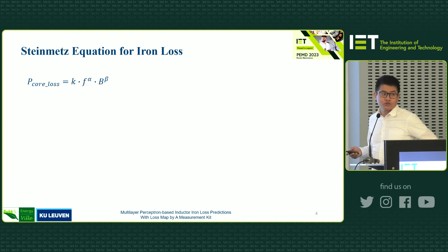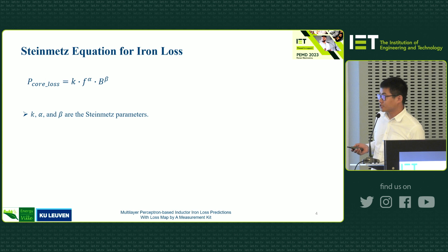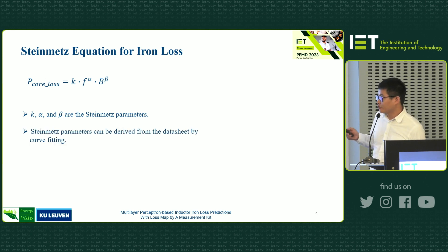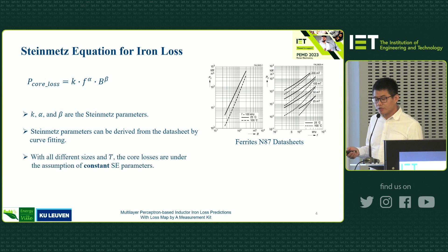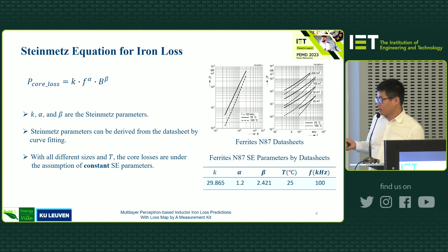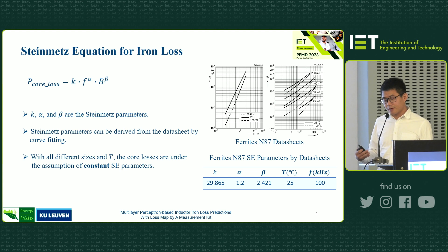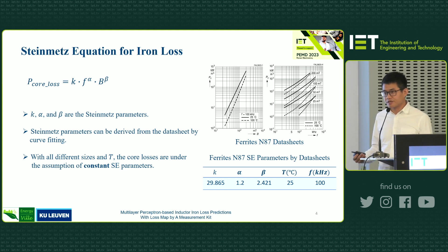But first, let's look into the Steinmetz equation for iron loss. It's a product combination of flux density and frequency. For the parameters K, alpha, and beta, you can derive them from the data sheets provided by the manufacturer. But the problem is that normally when you use a certain material, the parameters always stay constant. There is a problem — because the iron loss is always varied even with the same material. If you have different sizes, sheets, or temperatures, the iron loss is always different.